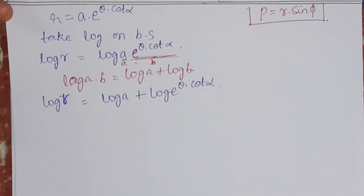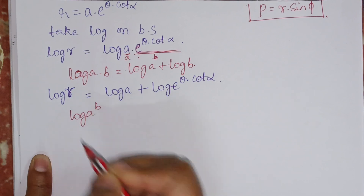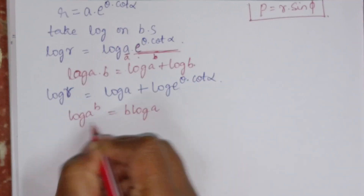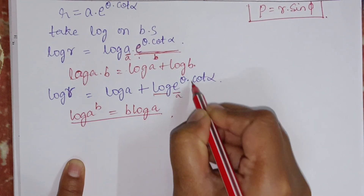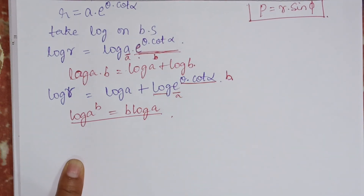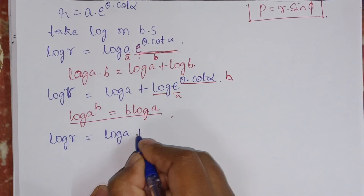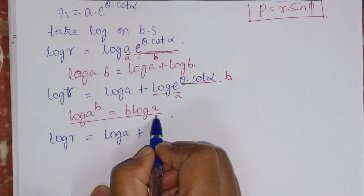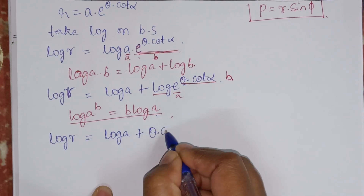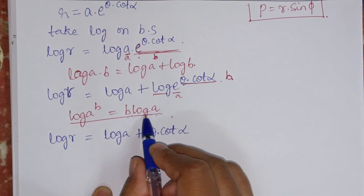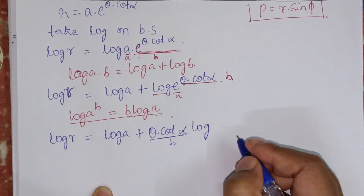After expansion, log R equals log A plus log E to the power theta into cot alpha. Now, if you remember, log A to the power B is nothing but B log A. So here, this is log and E is considered as A, and theta into cot alpha is B. It will become log R equals log A plus theta into cot alpha, because log E equals 1.